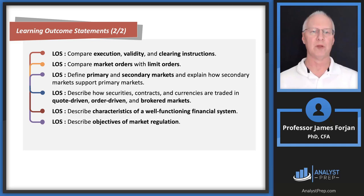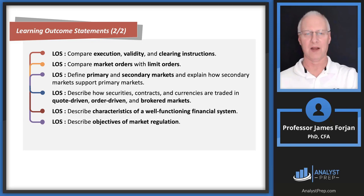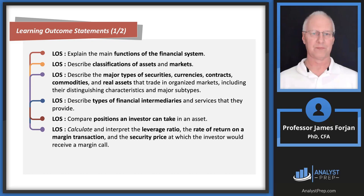If I have a financial asset and want to sell it to you, the easiest way would be to meet on the street. But that doesn't work because we don't know each other, and large companies like Procter & Gamble have billions of outstanding common shares. We need a general meeting place — that's what the first LOS is about: explaining the main functions of the financial system, which is really about getting everyone together to agree on a market clearing price.